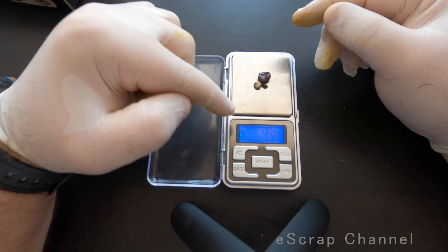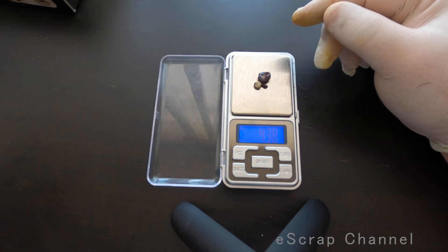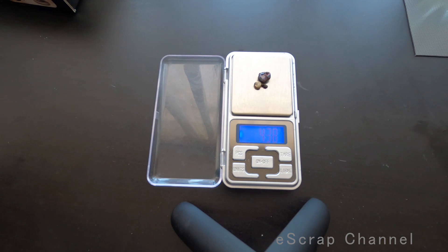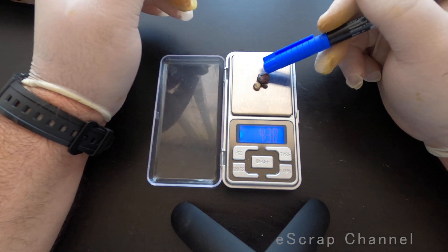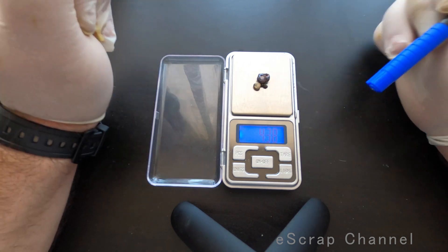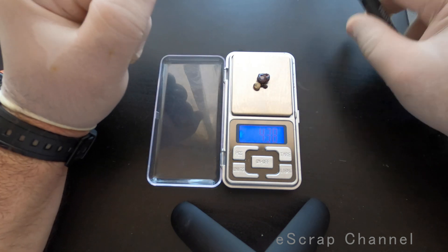So let's put this 4 grams, let's say 4.4 grams. We start with 4.4 grams of trash and let's check what is inside.